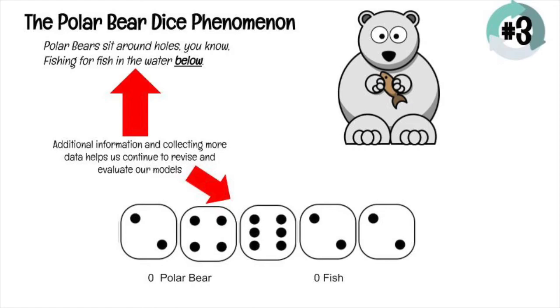In our polar bear dice phenomenon, we just got new information. I rolled the dice again. And I have five new numbers. And up at the top, I have a new piece of information. It says, polar bears sit around holes, you know, fishing for fish in the water below. This is new information. And when I look at these dice, this time we are told there are no polar bears showing up in all these dice. And there are no fish showing up in all these dice.